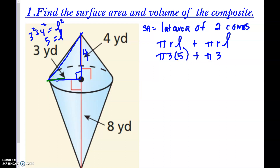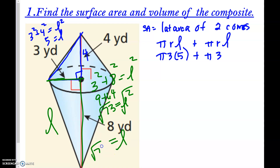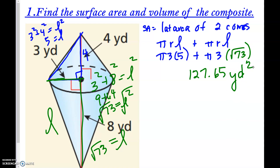For the bottom cone, knowing the radius (3) and height (8), we find the slant height: 3² + 8² = L², which gives 9 + 64 = 73, so L = √73. I'll keep the exact value √73 to avoid rounding errors. Taking 15π plus π·3·√73 and computing in the calculator gives 127.65 square yards.